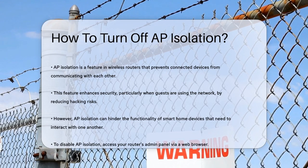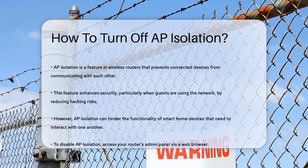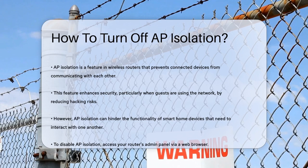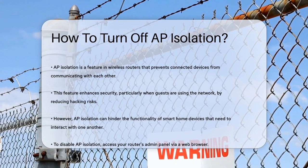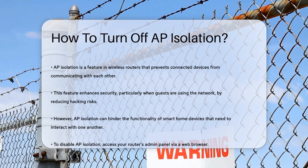AP isolation, or access point isolation, is a security feature in your wireless router that prevents devices connected to the same network from communicating with each other. This is great for security, especially if you have a lot of guests using your network, as it reduces the risk of hacking and unauthorized access.